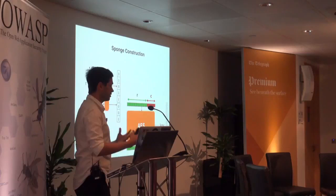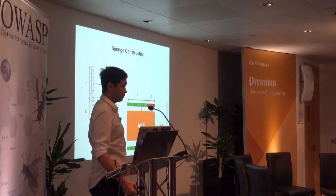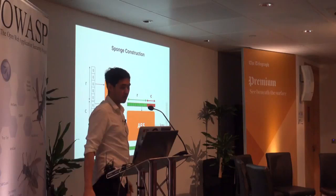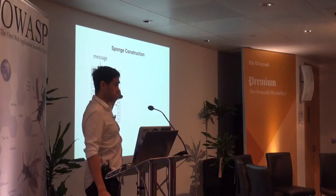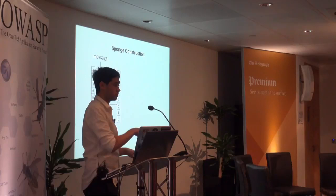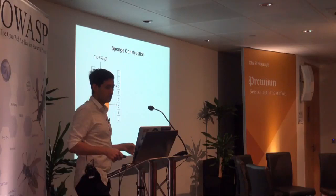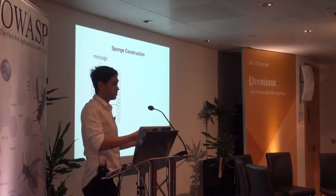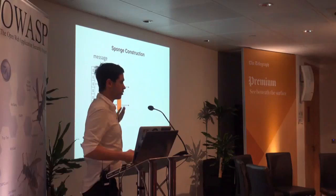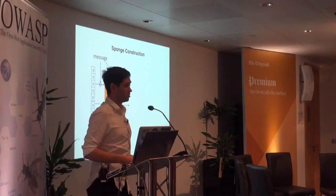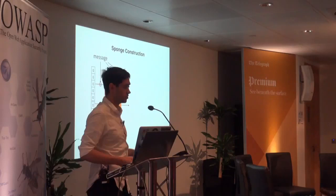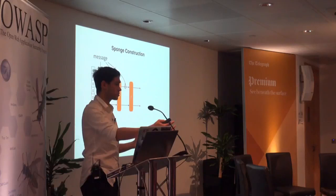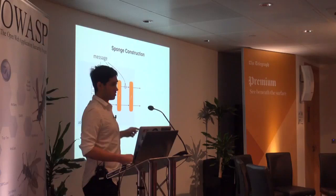If the message is longer than the public part, we split the message into blocks of the public part's size. After permutation, we XOR the next block with the public part again, then permute again. If there are three blocks, we just XOR again with the public part, never touching the secret part, and permute again. This process of getting the message into the algorithm is called absorbing — it's a sponge, so we absorb the message.